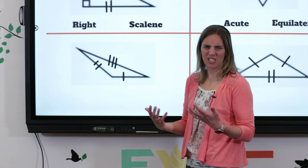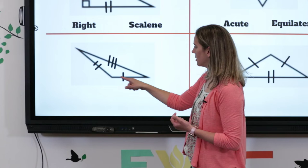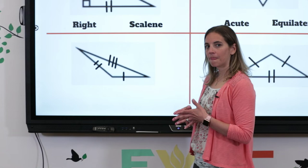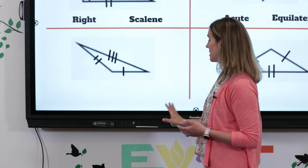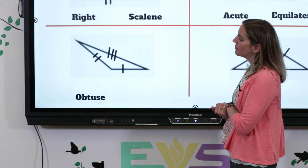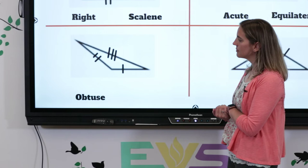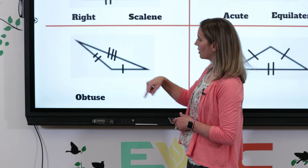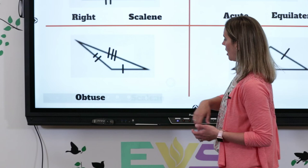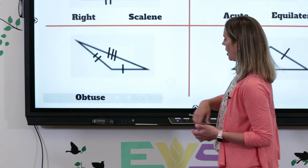Take a look at this one — let's talk angles first. The big bossy angle that gives it away: is it acute, obtuse, or right? It's obtuse. So automatically we know this is an obtuse triangle. Now look at the sides: one tick mark, two tick marks, three tick marks — all sides different. That's our silly scalene. So we have an obtuse scalene triangle.